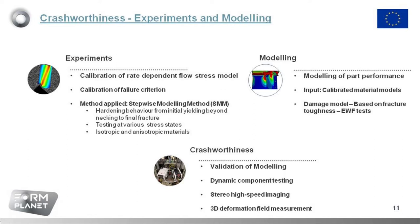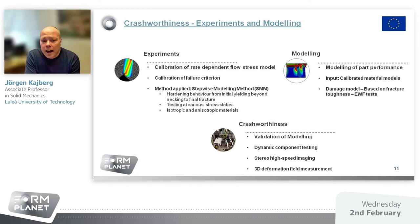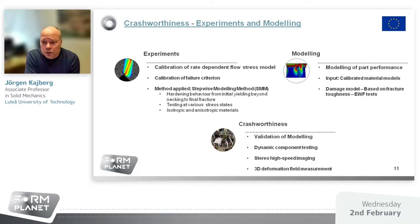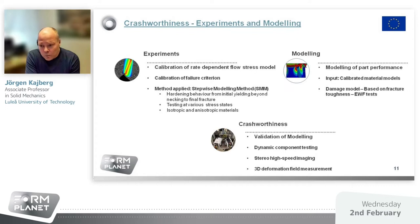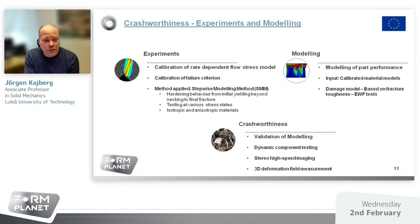The step-wise modeling method characterizes the hardening behavior from initial yielding beyond necking all the way to final fracture. Testing is performed at various stress states and it works for both isotropic and anisotropic materials. For the modeling of part performance, the input will be the calibrated models, and we will include a damage model similar to the one used for edge cracking. In this case, the calibration of the damage model is based on EWF tests performed at LTU at high strain rates, so it fits better for problems with high strain rates involved.